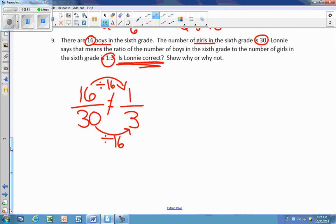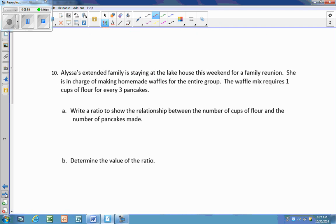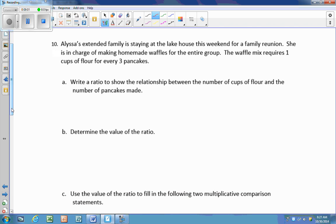This means that they are not equivalent ratios and Lonnie is not correct. And the work that I have on here is enough work to show that Lonnie is not correct. Number 10, Alyssa's extended family is staying at the lake house this weekend for a family reunion. She is in charge of making homemade waffles. This actually, and I apologize, should say pancakes.